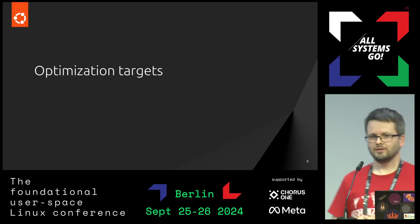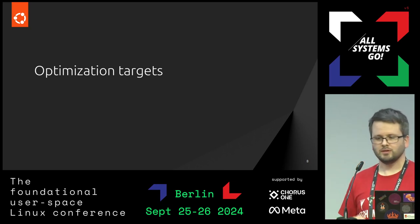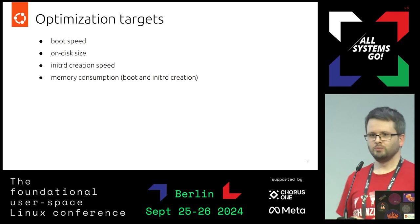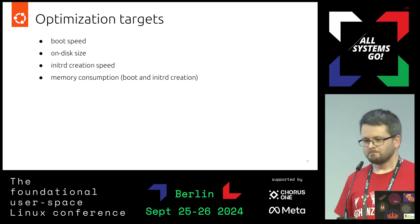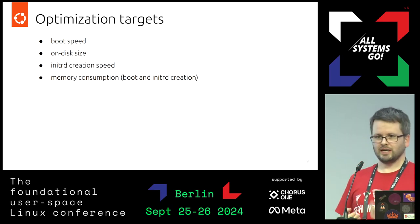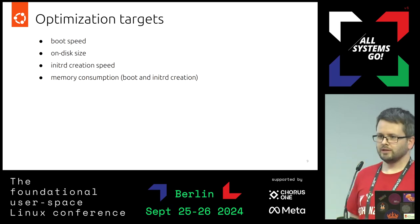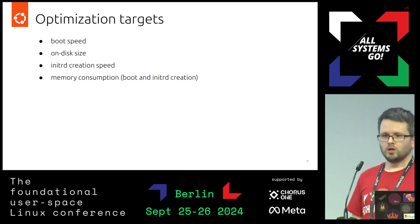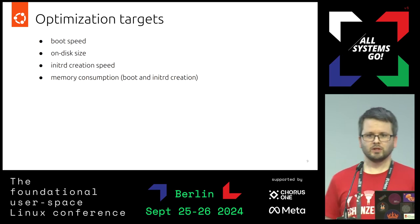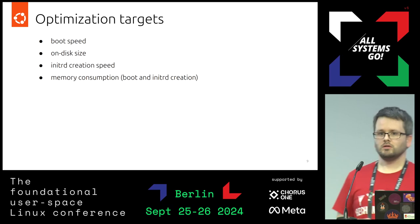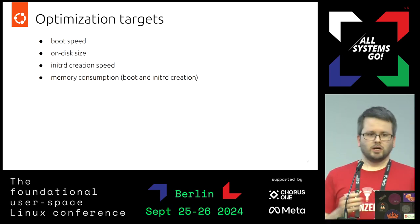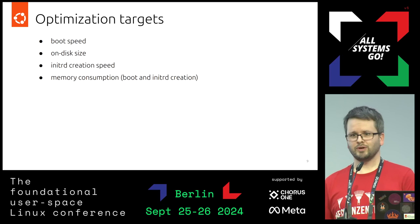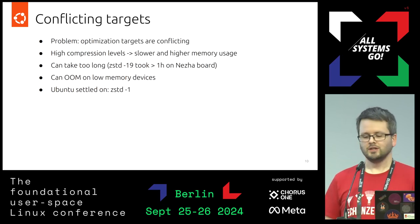If you want to optimize, you can try to optimize in different directions. You can try to improve boot speed so the system boots faster. Or optimize on-disk size of the initrd, which helps people who decided to have a smaller ESP partition ten years ago and now run out of space. Or optimize the creation speed so you don't wait long when you update a new kernel. Or optimize memory consumption during boot and during creation time. But often these targets conflict.